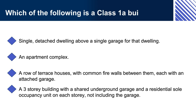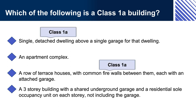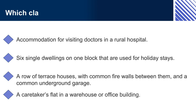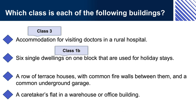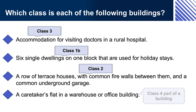Which of the following is a Class 1A building? A single detached dwelling above a single garage for that dwelling? An apartment complex? A row of terrace houses with common firewalls between them, each with an unattached garage? A three-storey building with a shared underground garage and a residential sole occupancy unit on each storey? Options 1 and 3 are both Class 1A buildings. Options 2 and 4 are both Class 2 buildings. Which class is each of the following? Accommodation for visiting doctors in a rural hospital is Class 3. Six single dwellings on one block used for holiday stays is Class 1B. A row of terrace houses with common firewalls and a common underground garage is Class 2. A caretaker's flat in a warehouse or office building is a Class 4 part of a building.